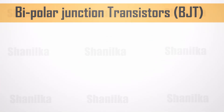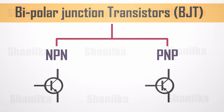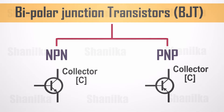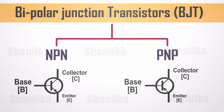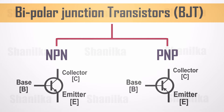The bipolar junction transistors, or BJTs, are divided into two groups: NPN and PNP. The circuit symbols for both the NPN and PNP BJTs are shown here. The pins are labeled collector C, base B, and emitter E. The only difference between the symbols of NPN and PNP is the direction of the arrow on the emitter. The arrow on an NPN points out, and on the PNP it points in.